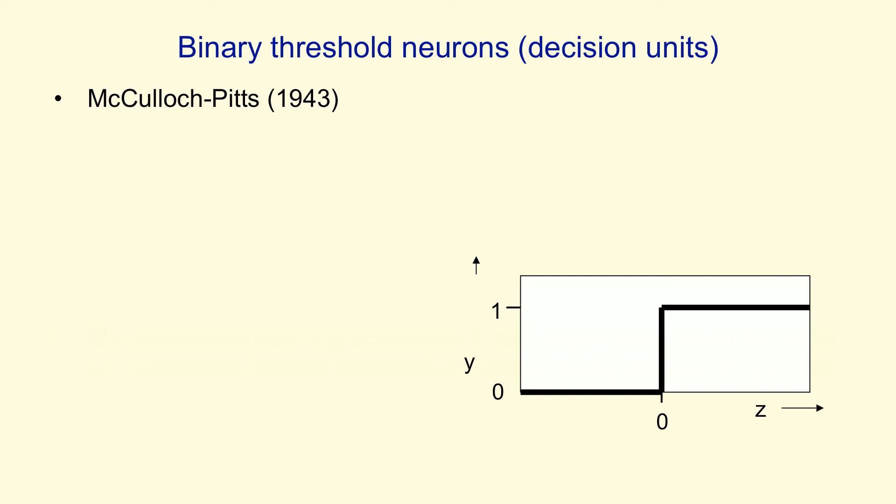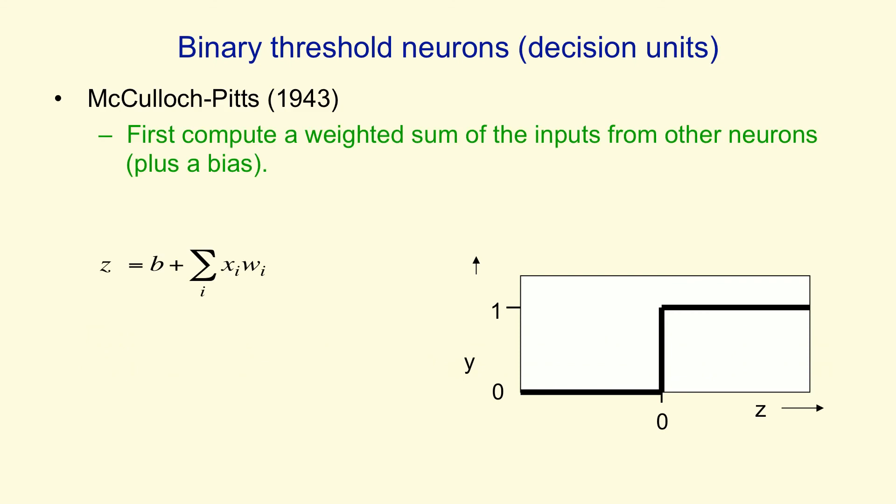So the decision unit in a perceptron is a binary threshold neuron. We've seen those before, and just to refresh you on those: They compute a weighted sum of the inputs they get from other neurons, they add on a bias to get their total input, and then they give an output of 1 if that sum exceeds 0, and they give an output of 0 otherwise.